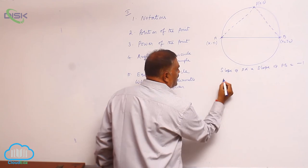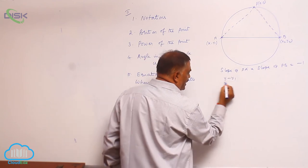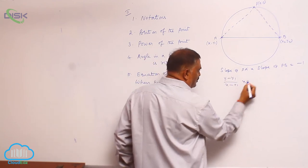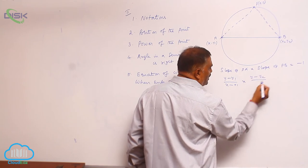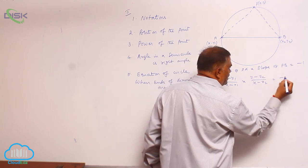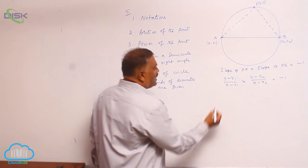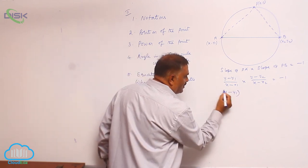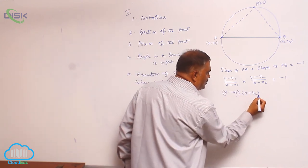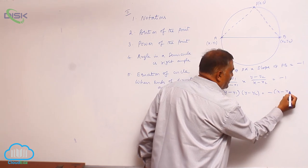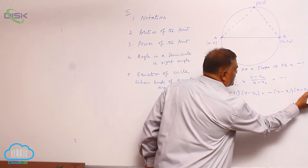Slope of PA: y minus y₁ by x minus x₁ into y minus y₂ by x minus x₂ is equal to minus 1. Now, y minus y₁ into y minus y₂ is equal to minus of x minus x₁ times x minus x₂.